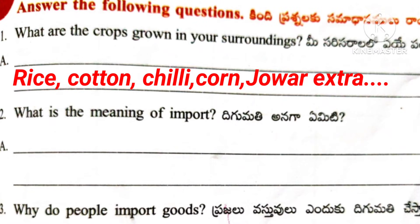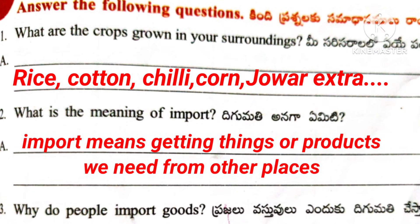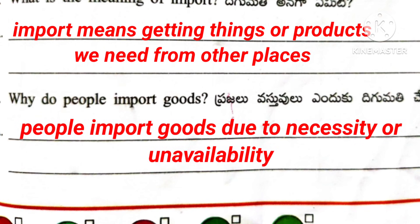Second question: What is the meaning of import? Answer: Import means getting things or products we need from other places. Question number 3: Why do people import goods? Answer: People import goods due to necessity or unavailability.